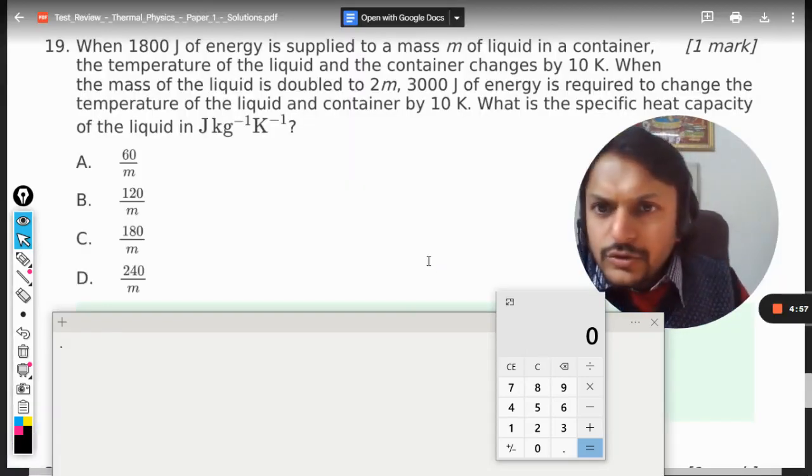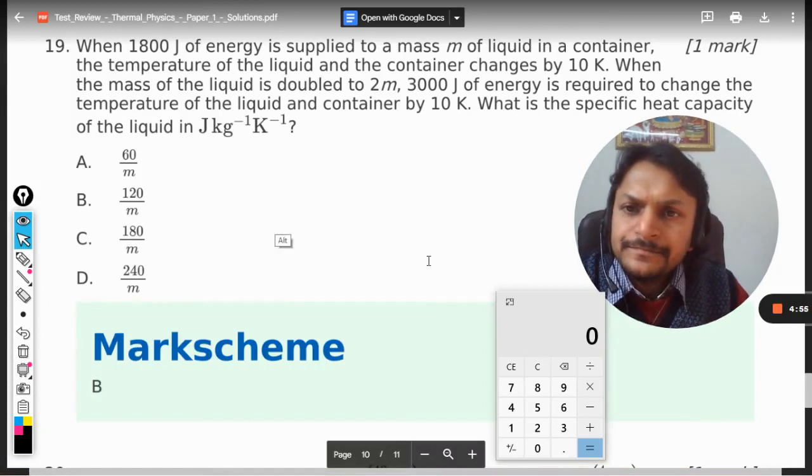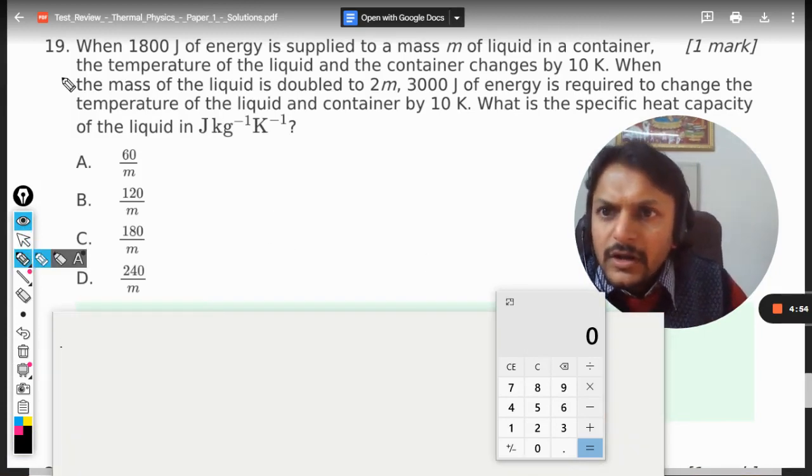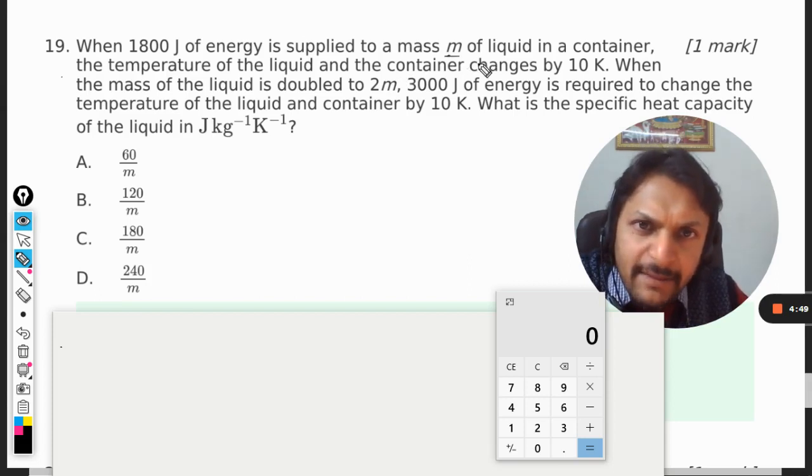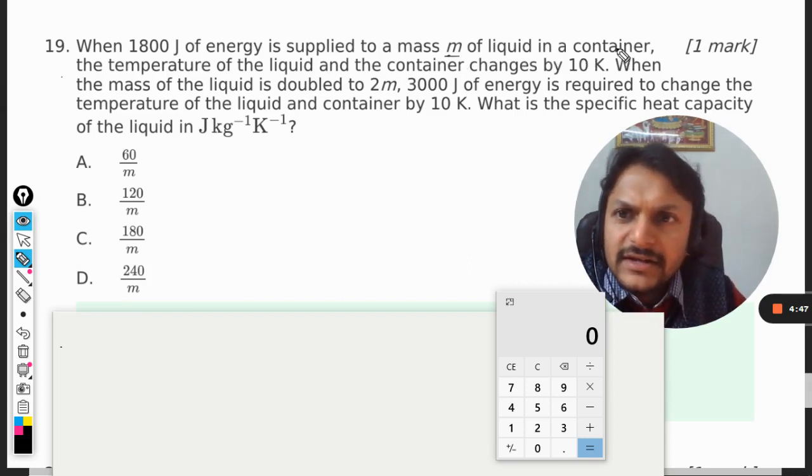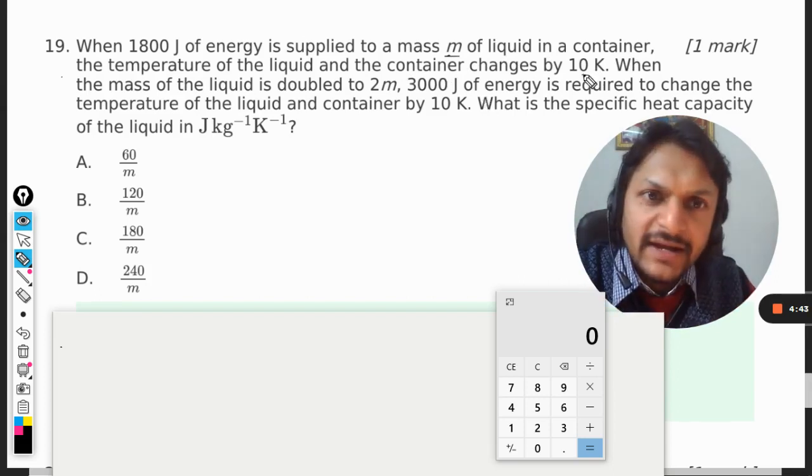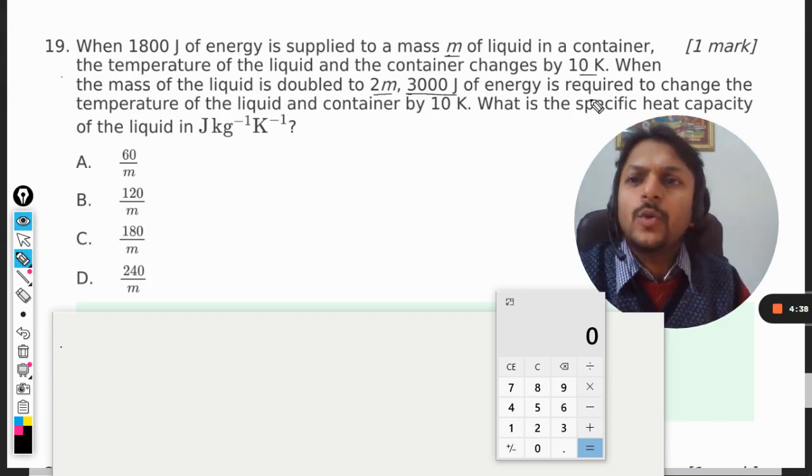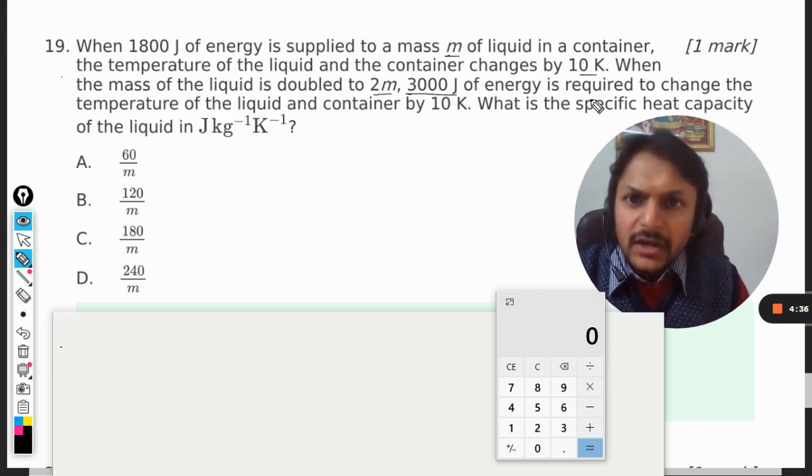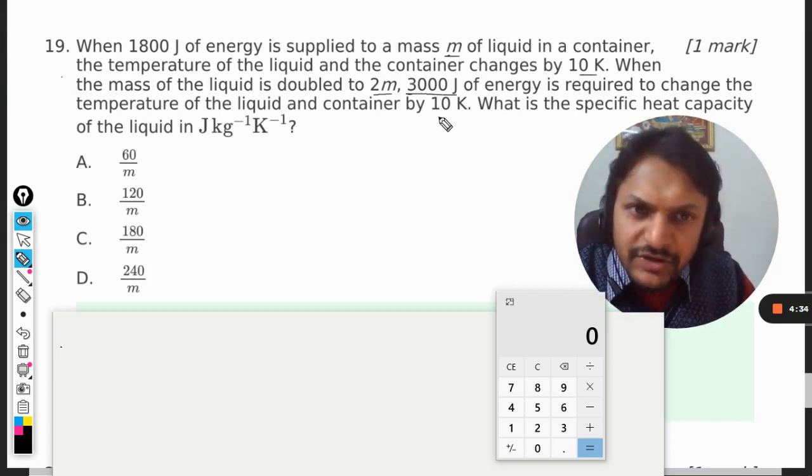Okay dear students, let us see how to do this question. When 1800 joules of energy is supplied to a mass m of liquid in a container, the temperature of the liquid and the container changes by 10 K. When the mass of liquid is doubled, 3000 joules of energy is required to change the temperature by the same difference.